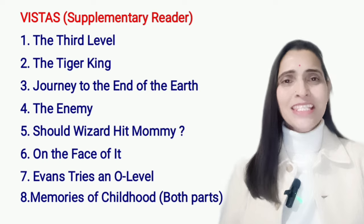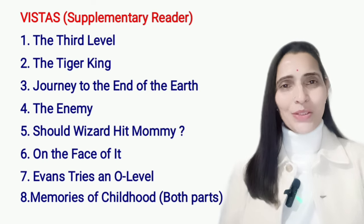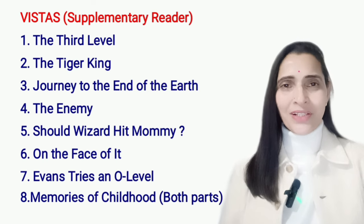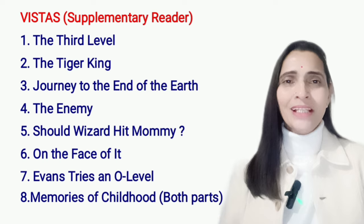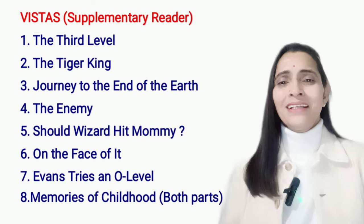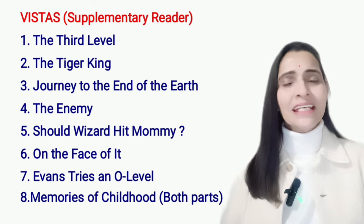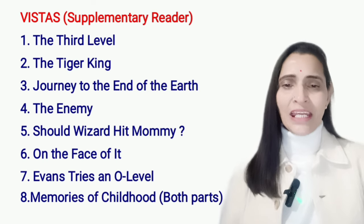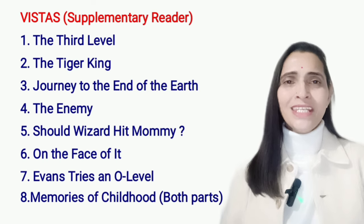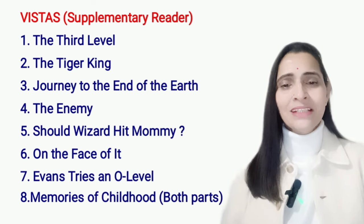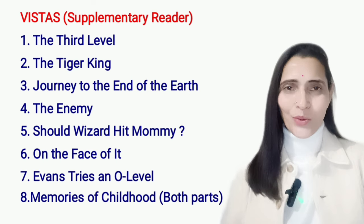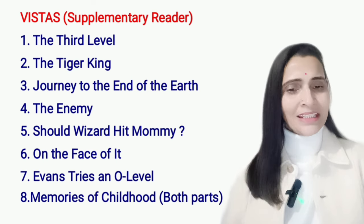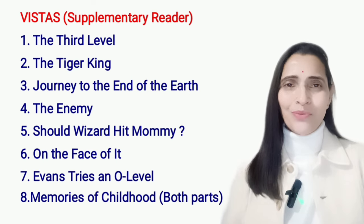Second book: Vistas, Supplementary Reader. In this book, there are total eight chapters and all eight chapters are included in the board's syllabus. Chapter 1: The Third Level. 2: The Tiger King. 3: Journey to the End of the Earth. 4: The Enemy. 5: Should Wizard Hit Mommy. 6: On the Face of It. 7: Evans Tries an O-Level. 8: Memories of Childhood — both parts.